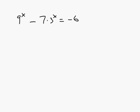It's not obvious at first what to do with the next equation. I would like it if this 9 to the x were instead a 3 to the x — that might lead to some common factor. We can rewrite this as 3 squared to the x minus 7 times 3 to the x equals negative 6.